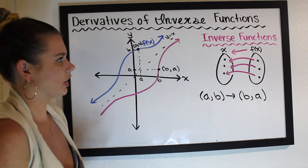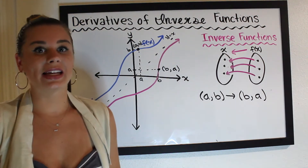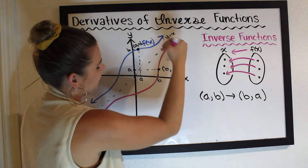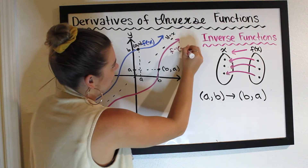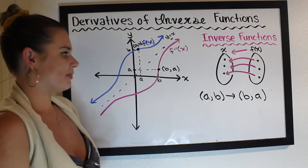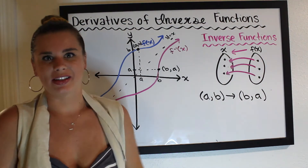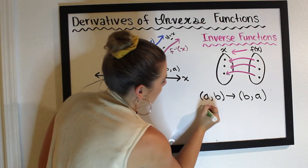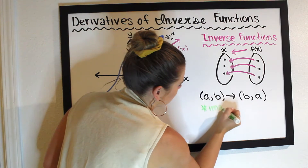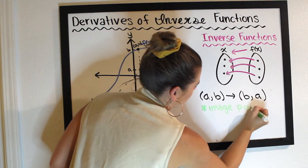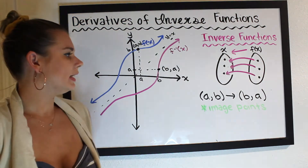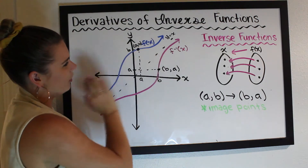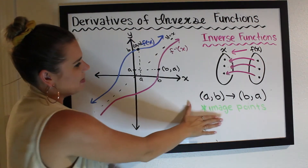The notation for the inverse of f of x is f with a negative one in the superscript — so f inverse of x. A little vocabulary: when we have a, b and b, a, these are called image points. Image points are simply a reflection over the line y equals x, and all we do is swap our input and our output.